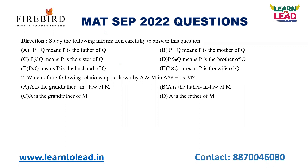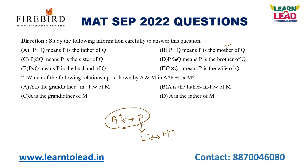Taking the equation: A slash P — A is the husband of P. Male is positive, female is negative. P is the mother of L (P plus L). Cross denotes wife, so L is the wife of M. A and P are the parents, and L is their daughter. L and M are husband and wife. So the relationship between A and M can be determined — just draw the family diagram, and within 5 seconds it will be very easy.